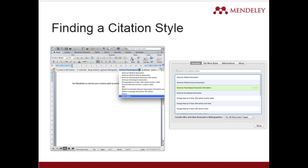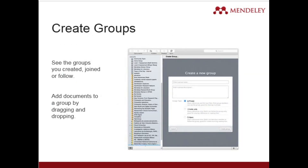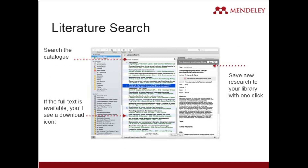Another very important feature of Mendeley is that you can create groups and choose whether to make them private or public. This allows you to control restrictions on the created group. You can also do literature searching in Mendeley, download results, and save them to your Mendeley library. Documents saved this way will show a download icon so you can download them. With one click you can save particular research to your library.